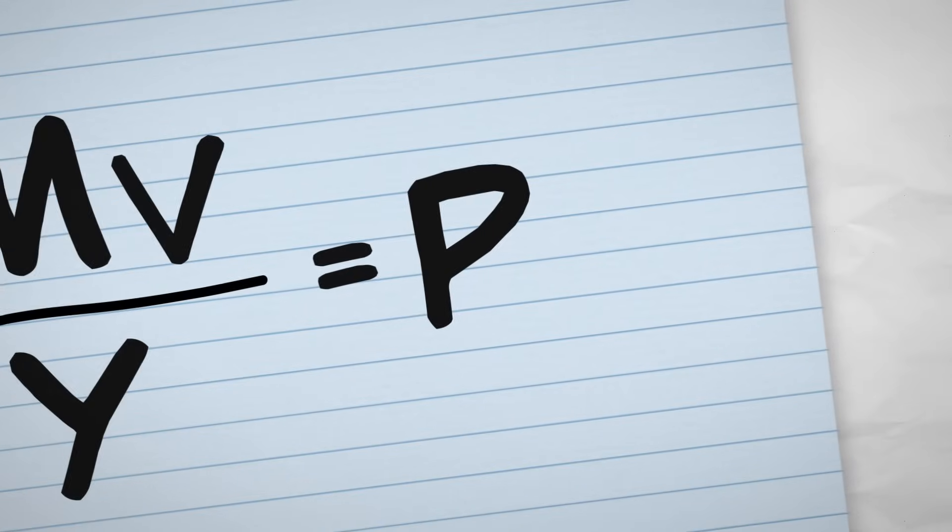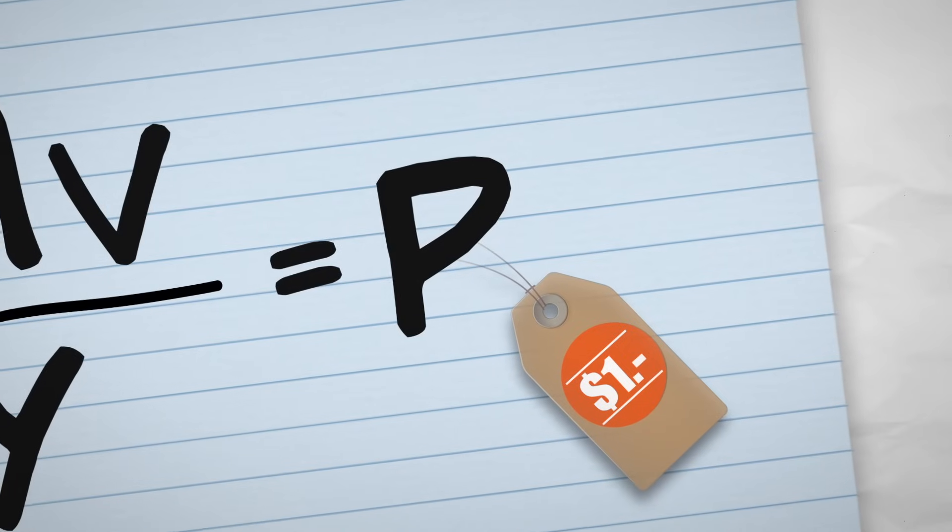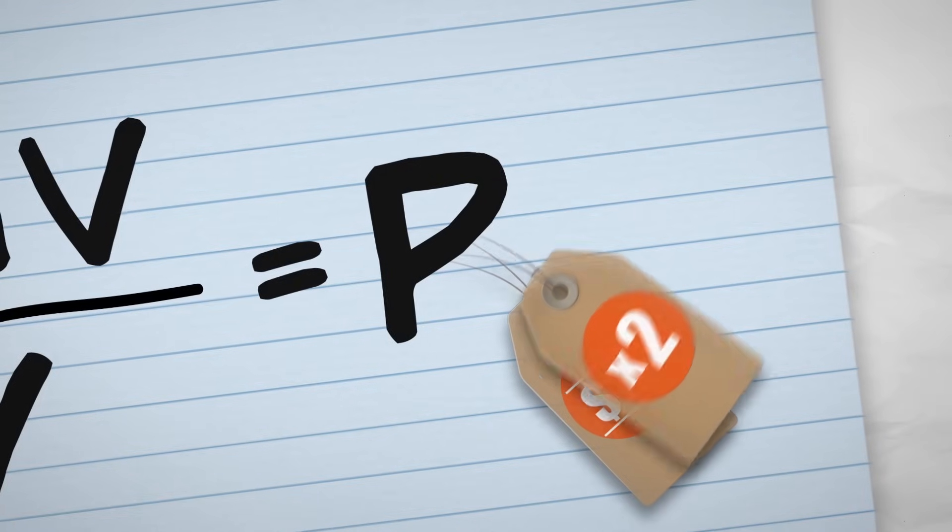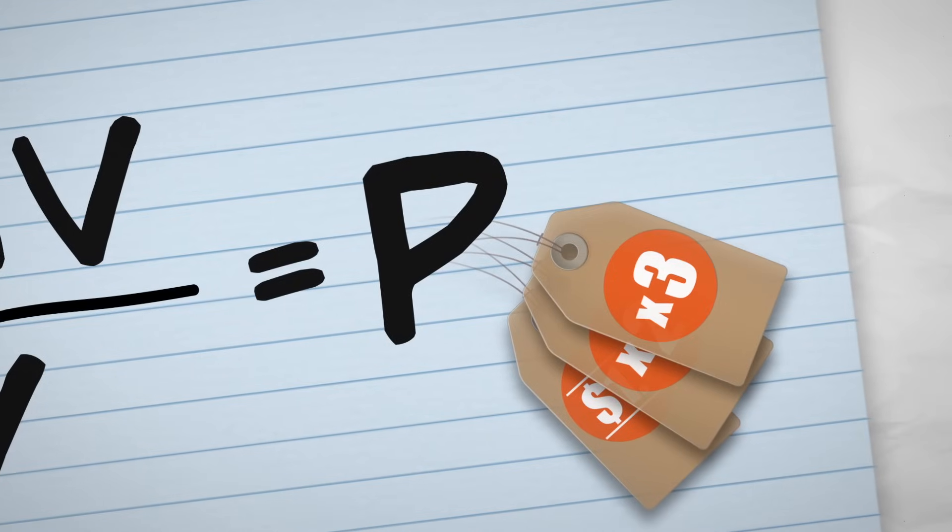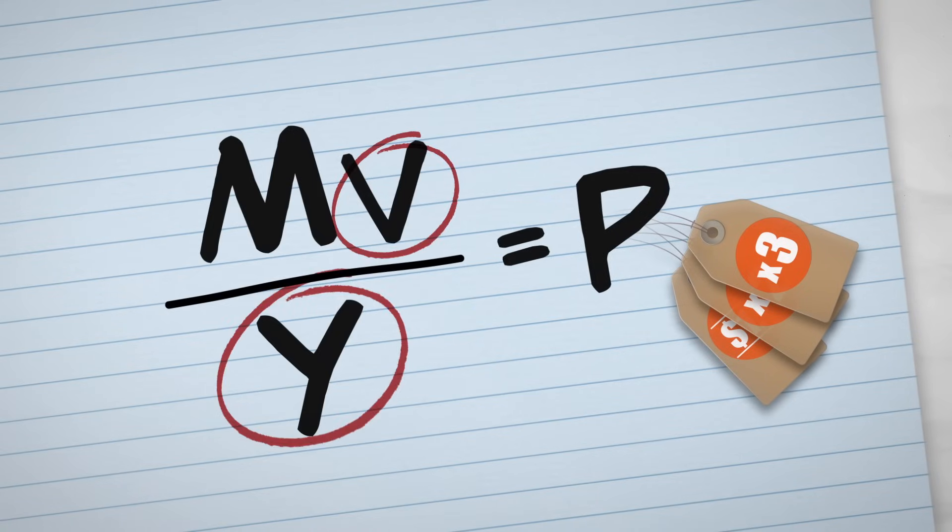Now remember that p, prices, they can change quite a bit in a short period of time. There are many times and places, for example, when prices have doubled or tripled in a year. On the other hand, v and y are pretty stable.